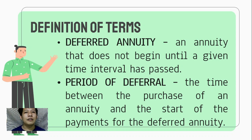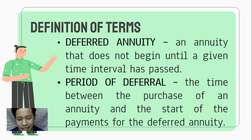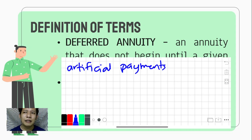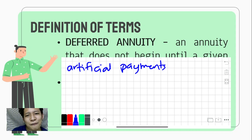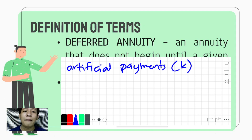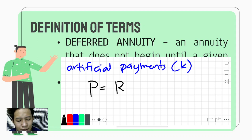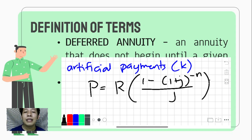During the period of deferral, the payments that occur are called artificial payments — from the word artificial, meaning fake. It's called a payment but you're not actually paying it. Artificial payments are denoted by k. And when we say deferred annuity, we are talking about the present value. Hence, we use the formula: P equals R times (1 minus (1 plus J) raised to negative N) over J.